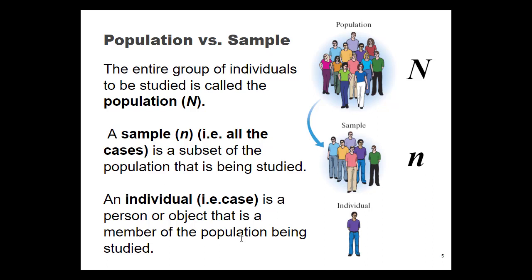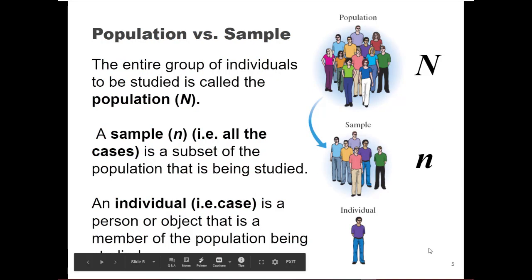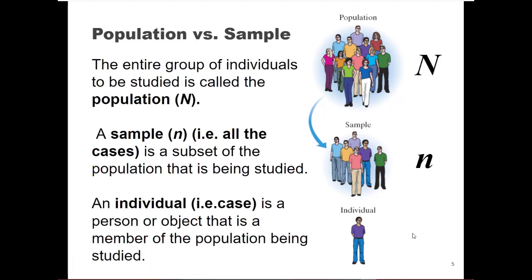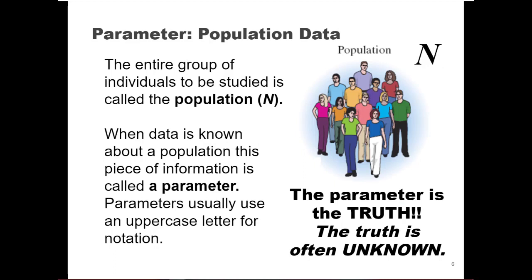If I had the population and then I took a group from that population to study, since I don't have access to everybody, that group is called a sample. A sample is a subset of the population used to get partial understanding of the population. The notation for sample is lowercase n. An individual is a person or object that is part of the sample, and since they are part of the sample they are also a member of the population that is being studied.